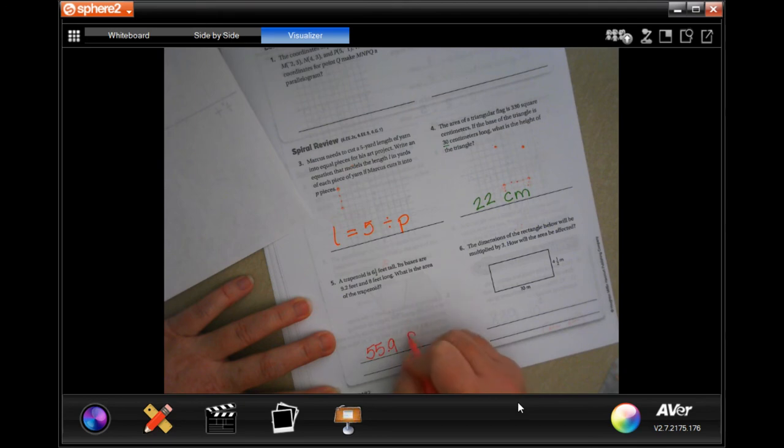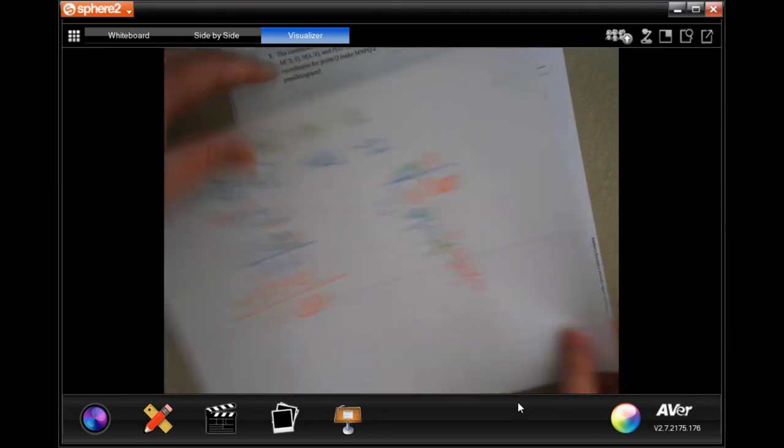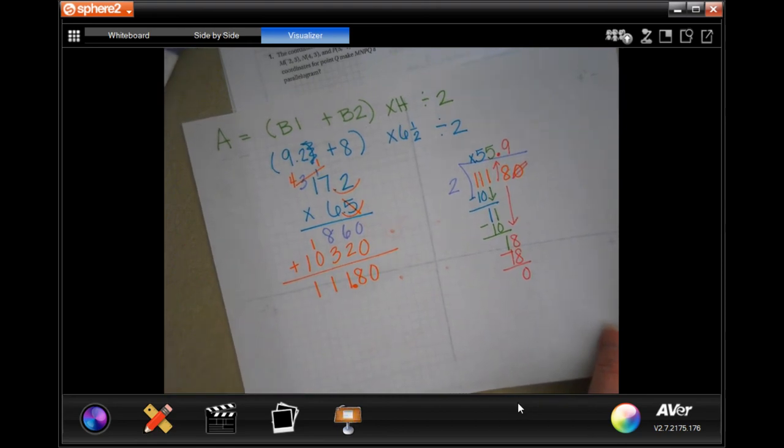55.9 feet squared. You can write square feet if you want to. I'm just not going to. But pause it and write down your work, guys. Show your work. Okay?